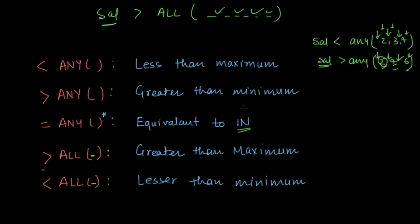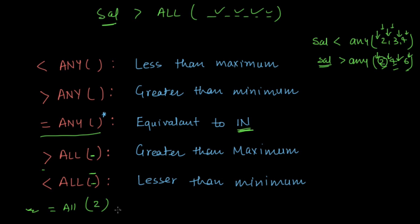So this was the whole concept of set comparison operators: IN, ANY, and ALL. IN is equivalent to equal to ANY, and equal to ALL is meaningless since a single value cannot equal multiple different values. Now let's do an example in the next lecture. Thanks for watching — if you have any doubts, please ask in the doubt section. See you in the next lecture.